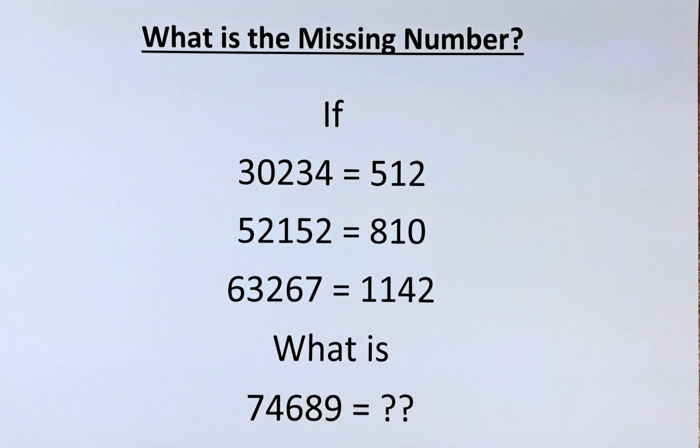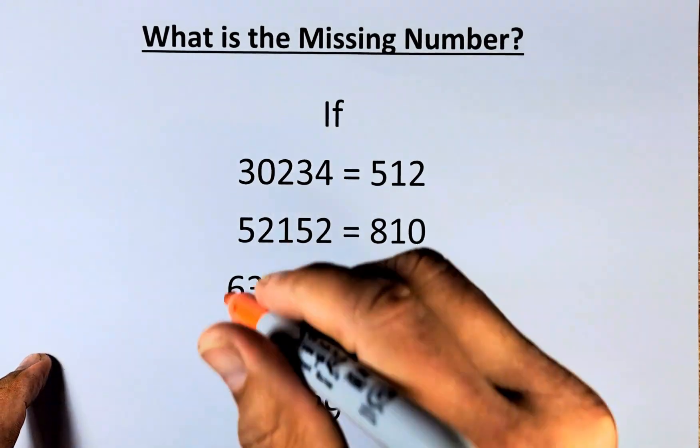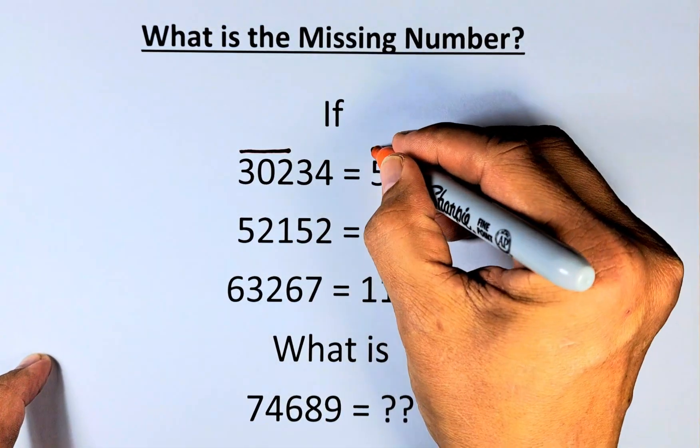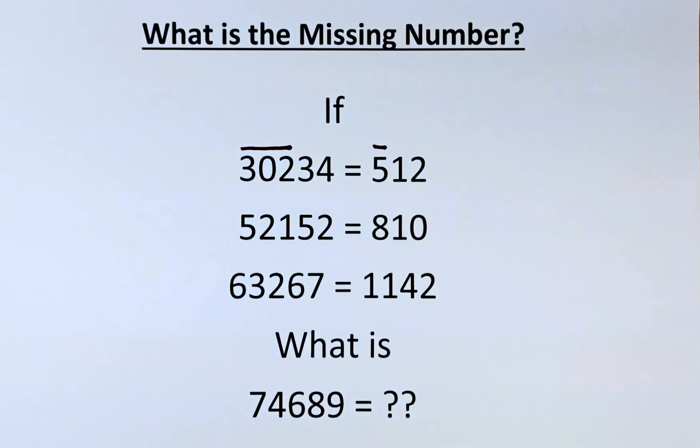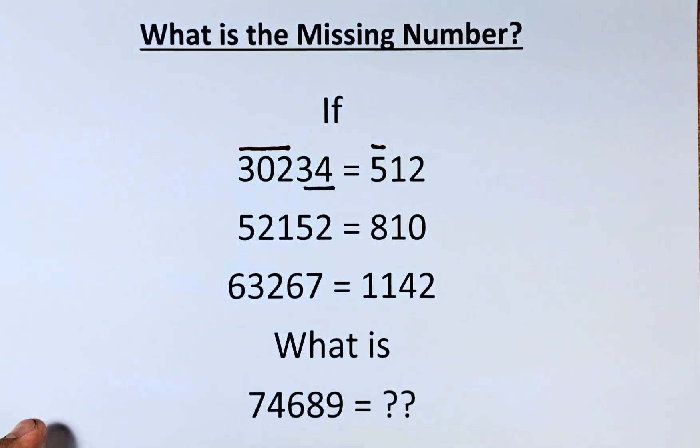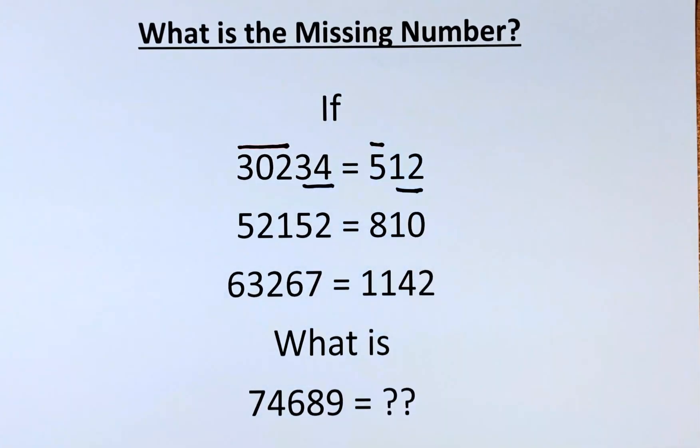Now, we have to manipulate the numbers. 30234 equals 512, you have to look at the first 3 numbers. So 302, when you add them up, 3 plus 0 plus 2, that will give you 5. And the last two digits, 3 and 4, you multiply them, 3 times 4 is 12, that's how you get 512.